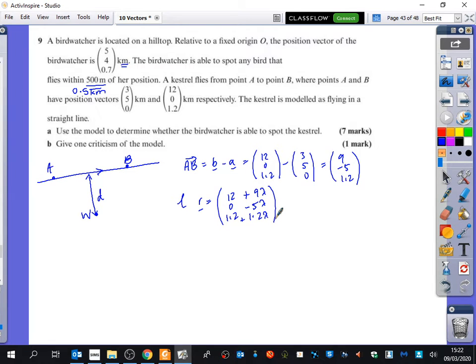Now I'm going to try and find out the vector between a general point. So I'll call the general point C. I don't really mind what you want to call it. And then the bird watcher W which is 5, 4, 0.7. So if I find the vector CW. In fact I'm going to do the vector WC just because it makes my life easier. To do the general point C minus the general point W.